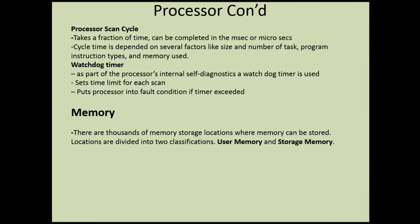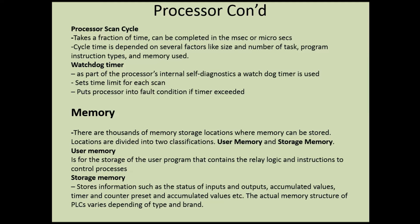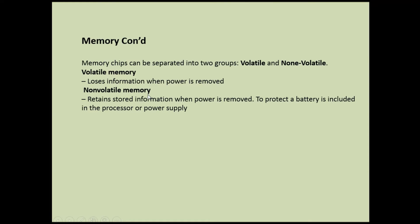There are thousands of memory storage locations where memory can be stored. Locations are divided into two classifications: user memory and storage memory. User memory is for storage of the user program that contains relay logic and instructions to control the process. Storage memory holds information such as the status of inputs and outputs, accumulated values of timers and counters, presets and accumulated values, etc. The actual memory structure of the PLC varies depending on the type and brand. Memory chips can be separated into two groups: volatile and non-volatile. Volatile memory loses information when power is removed; non-volatile memory retains stored information when power is removed. To protect data, a battery is included in the processor or power supply.